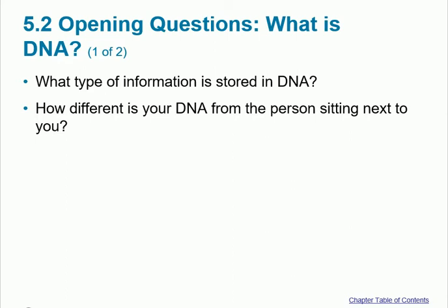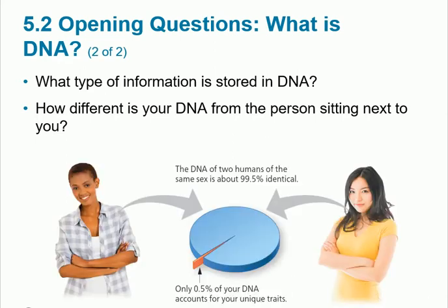The DNA of one person is obviously different from the next, but not all of it — the vast majority is the same. We look completely different, yet 99.5% of our DNA is identical. What makes all the visible differences between people is only about half a percent of the DNA.